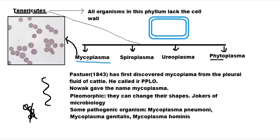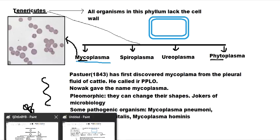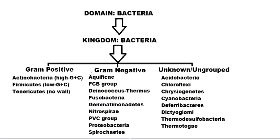You may wonder why it is called Mycoplasma — earlier people used to think it had some relation with fungi, so they named it 'myco,' meaning fungi. People used to classify everything they didn't understand under fungi. That was all about Tenericutes. In the next video we will talk about gram-negative bacteria including the Aquificae and FCB group.